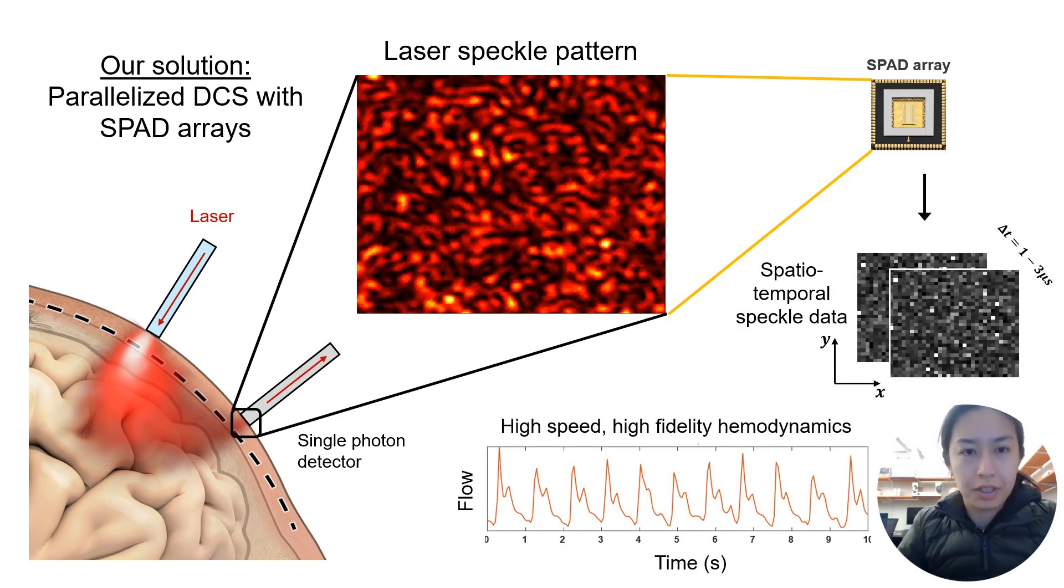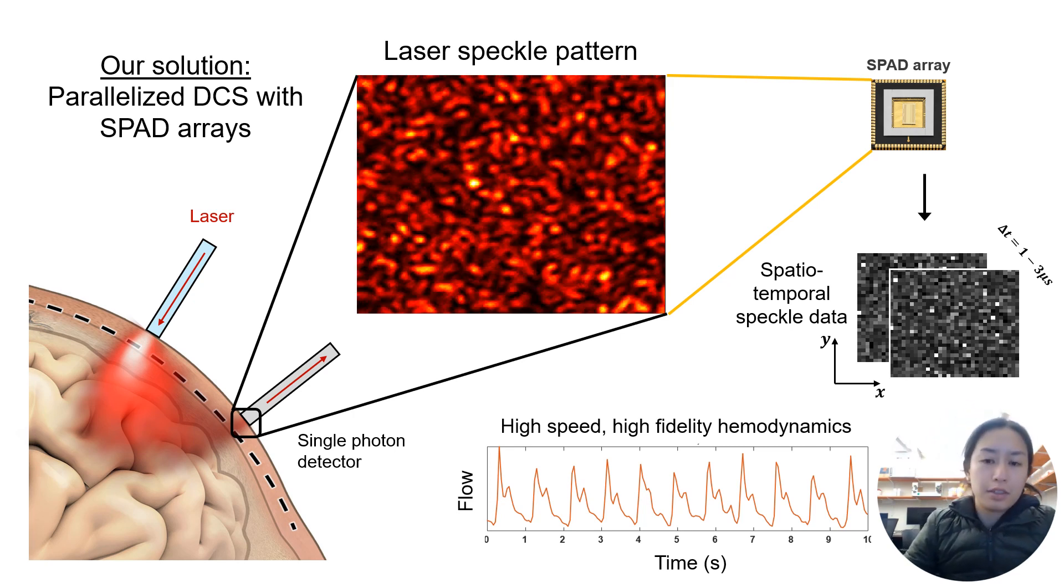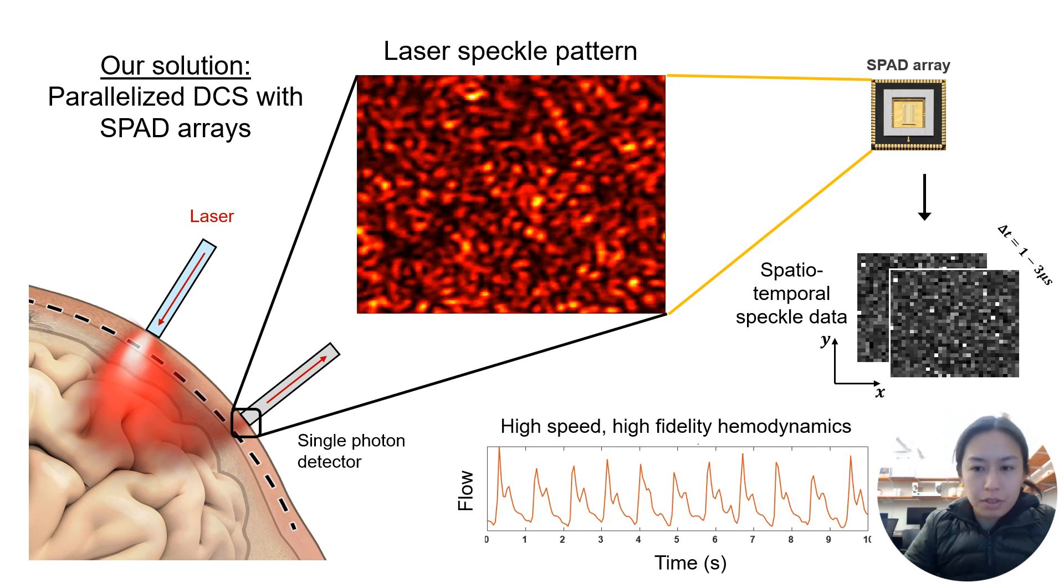The idea is to use spatial-temporal speckle data to recover high-speed, high-fidelity hemodynamics, particularly in photon starved regimes, such as when we have very long source detector separations.